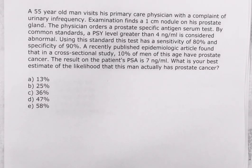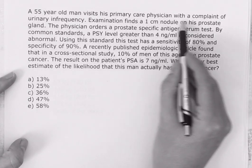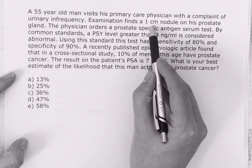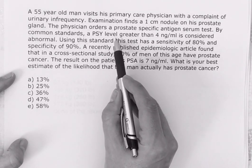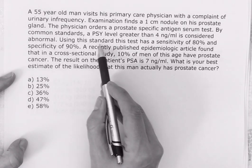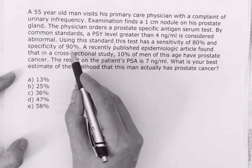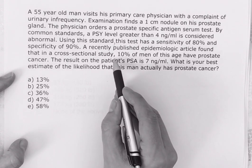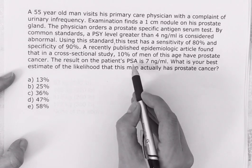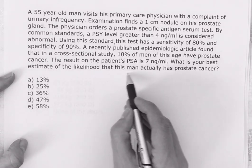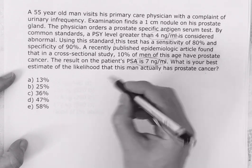A 55-year-old man visits his primary care physician with a complaint of urinary frequency. Examination finds a one-centimeter nodule on his prostate gland. The physician orders a PSA serum test; by common standards, a PSA level greater than four is considered abnormal. This test has a sensitivity of 80% and a specificity of 90%. A cross-sectional study found that 10% of men of this age have prostate cancer. The patient's PSA result is seven, so the test is positive.